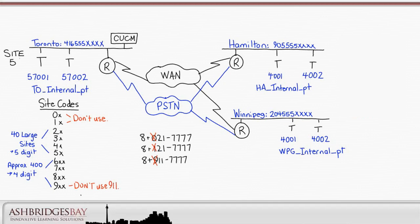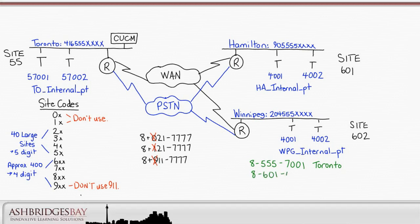Let's use site code 55 for Toronto. In this case, we've lined the site code up with the office code, which means the user's 7-digit internal numbers will be the same as the last 7 digits of their local number. We'll use site codes 601 and 602 for Hamilton and Winnipeg respectively. We can't line up site and office codes for all sites, particularly where two sites share the same office code for local dialing.